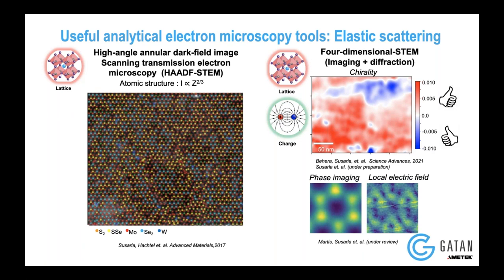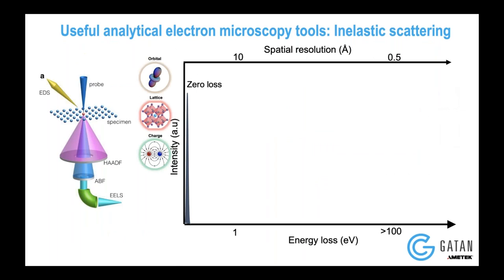But all of this is actually related to elastic scattering. You also have inelastic scattering effects that can give you completely different information. Most of the elastic scattering is concerned with the nuclear contrast, so it's mostly sensitive to the structural properties of materials. But the electronic properties are mostly controlled by what happens in the valence band or how you have these various bosonic excitations at the nanoscale.